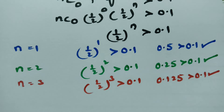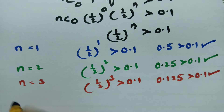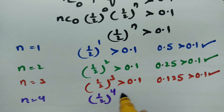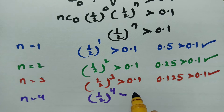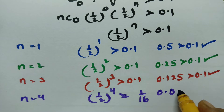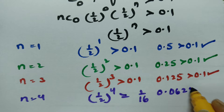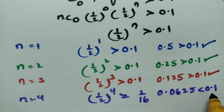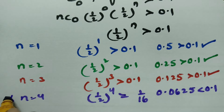Next, if I keep n equal to 4: (1/2)^4 = 1/16 = 0.0625, which is less than 0.1. So in this case, it fails.